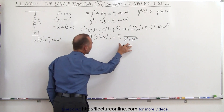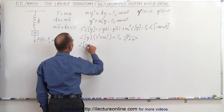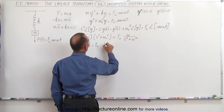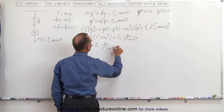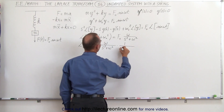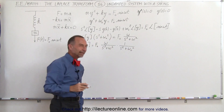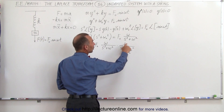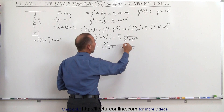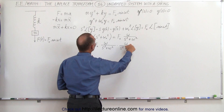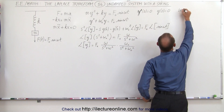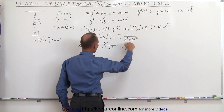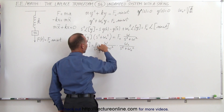Moving that over, those two terms are zero so we can factor out the Laplace transform of y. We get the Laplace transform of y times the quantity s squared plus omega sub-naught squared, equals f sub-naught times omega divided by s squared plus omega squared. Moving this to the other side, the Laplace transform of y equals f sub-naught times omega over the product of s squared plus omega squared and s squared plus omega sub-naught squared. We note that omega sub-naught equals the square root of k over m.